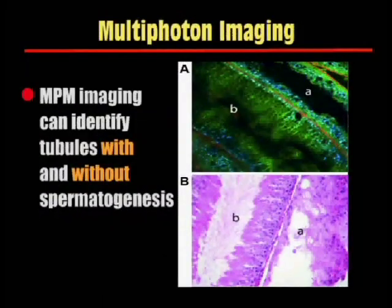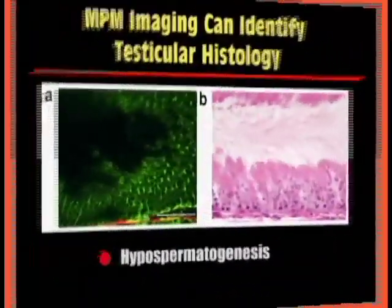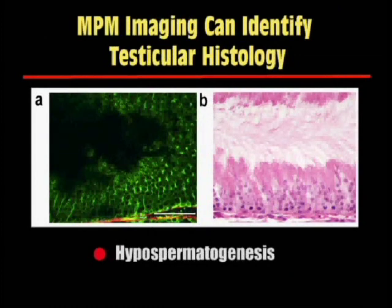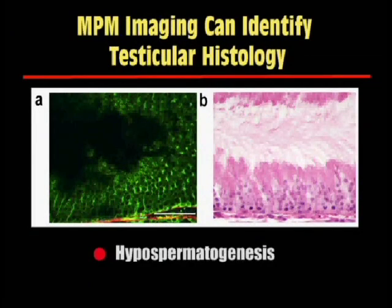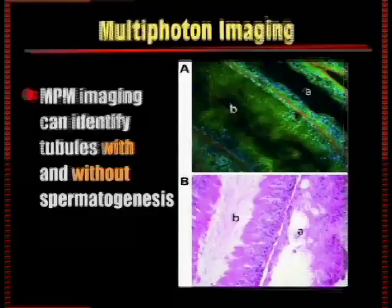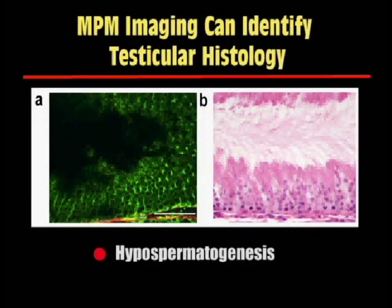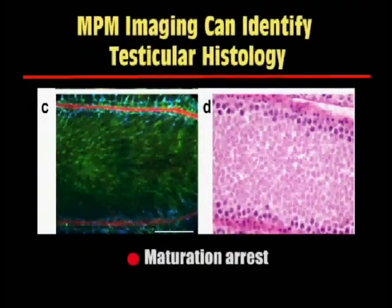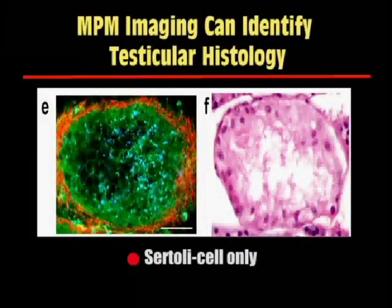Our results demonstrate that multiphoton microscopy can identify tubules with and without spermatogenesis. Panel A is an MPM image without exogenous labels or dyes, and Panel B is the corresponding H&E stained section of these tubules, concordant with MPM imaging results. In addition to identifying normal spermatogenesis, MPM can also distinguish the common testicular histologies seen in men with infertility. These figures show hypospermatogenesis, maturation arrest, and Sertoli cell only histology.